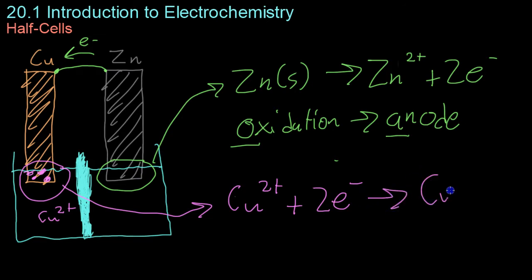You react them, or you reduce them rather, to form solid copper which builds up on this electrode. Because this is a reduction reaction, the copper is what's known as cathode.